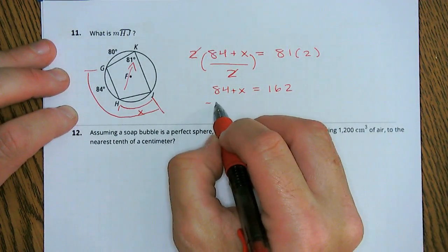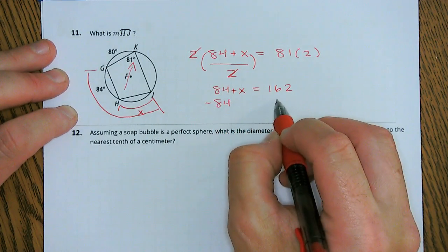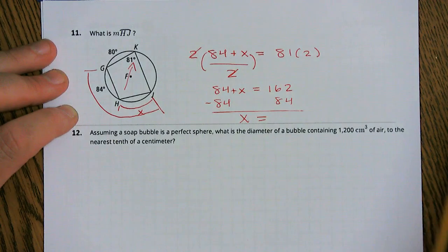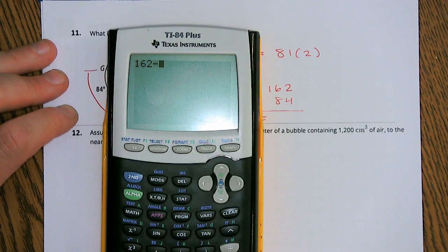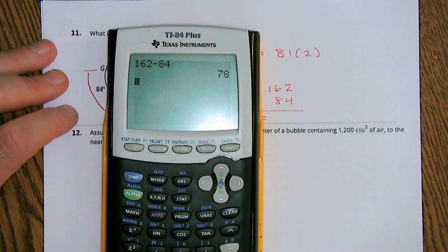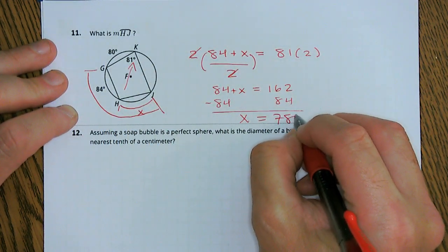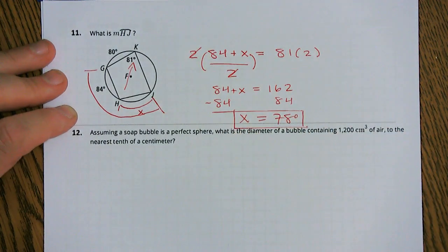Now, we've still got to solve for X here, so let's subtract 84 from both sides. So X is going to be equal to 162 minus 84. In this case, we're looking at 78 degrees.